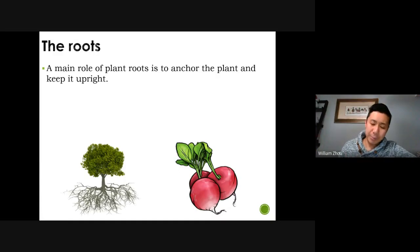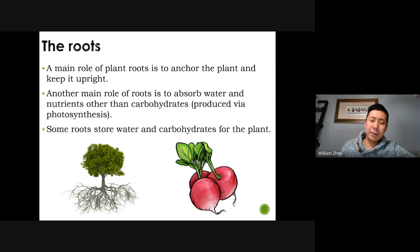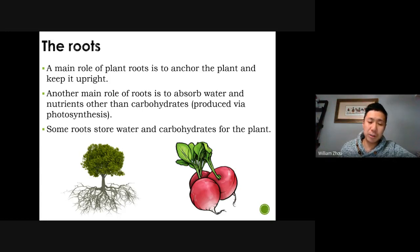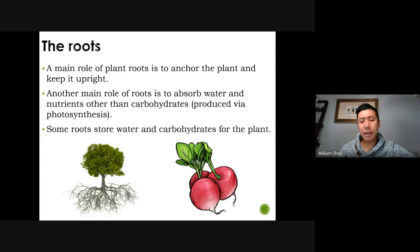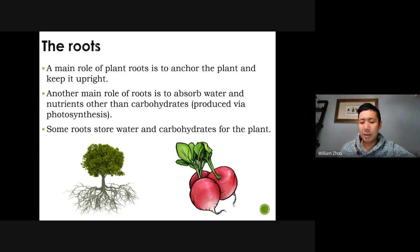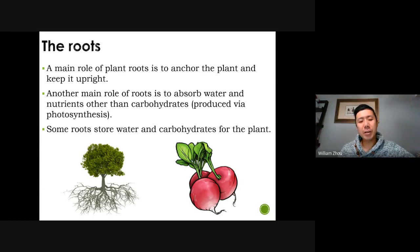The roots have multiple functions. One is to anchor the plant so it doesn't tip over — like the picture on the left with a tree that has many roots for stability. Another function is to absorb water, which is what we'll talk about today. And a third is to store nutrients, like a radish or a carrot — the flesh you eat from those are the roots. That's a quick recap of the stem and the root.